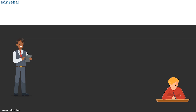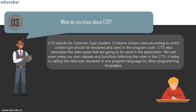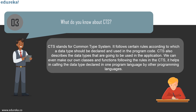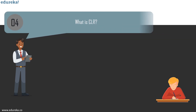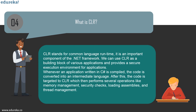Question 3: what do you know about CTS? The Common Type System (CTS) is a standard that specifies how type definitions and specific values of types are represented in computer memory, intended to allow programs written in different programming languages to easily share information. Question 4: what is CLR? CLR, Common Language Runtime, is an important component of the .NET framework used as a building block for applications, providing a secure execution environment. When C# code is compiled, it is converted into intermediate language and targeted to CLR, which performs memory management, security checks, loading assemblies, and thread management.